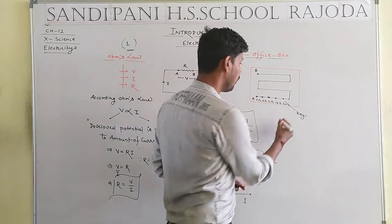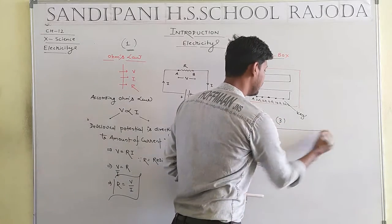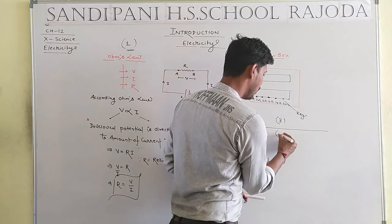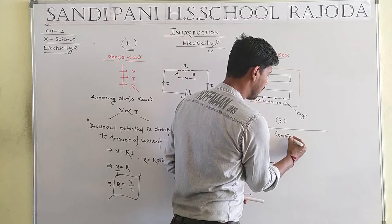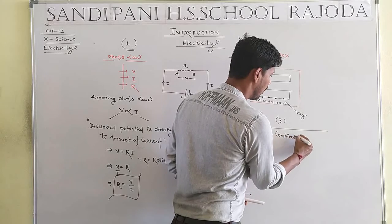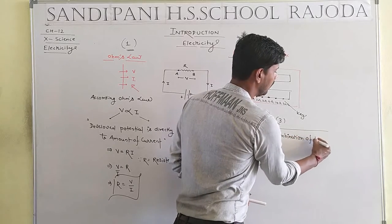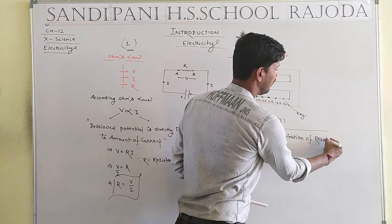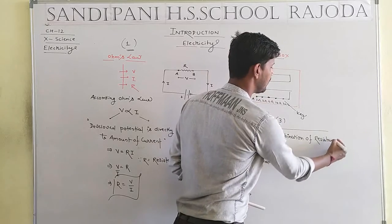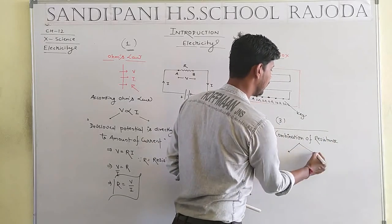Now, point number three: combination of resistance. The combination of resistance is basically divided into two categories — first, series combination, and second, parallel combination.